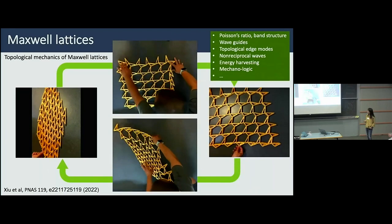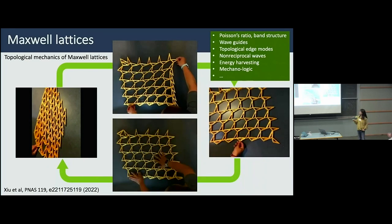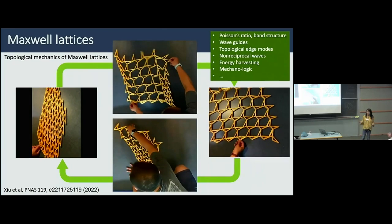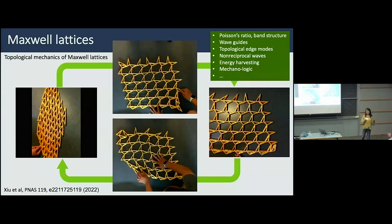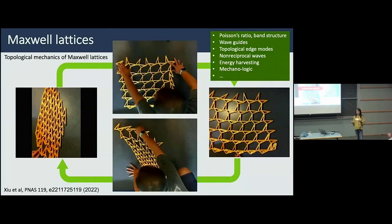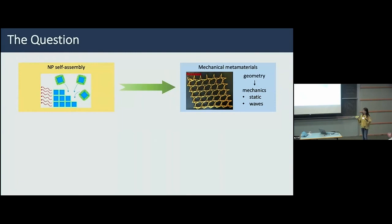Currently, most ways people use to create mechanical metamaterials involve macro-scale top-down methods, where unit cells are typically at the millimeter to centimeter scale. It would be really interesting to assemble these using nanoparticles. The advantage is clear: you can obtain a metamaterial that is small, and at the macro scale it will appear to be a homogeneous material. This connection looks straightforward because the key ingredient — control of geometry and structure — is precisely what we study in nanoparticle self-assembly.